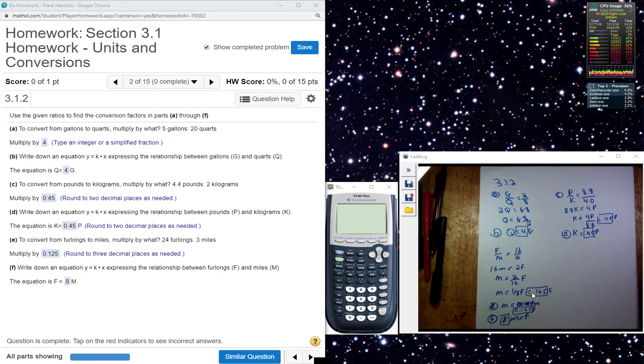The next one here is to write down an equation that represents this relationship. So they give us F is equal to something M. So I take my proportion and I solve it for F. So F is equal to 8M, in this case.